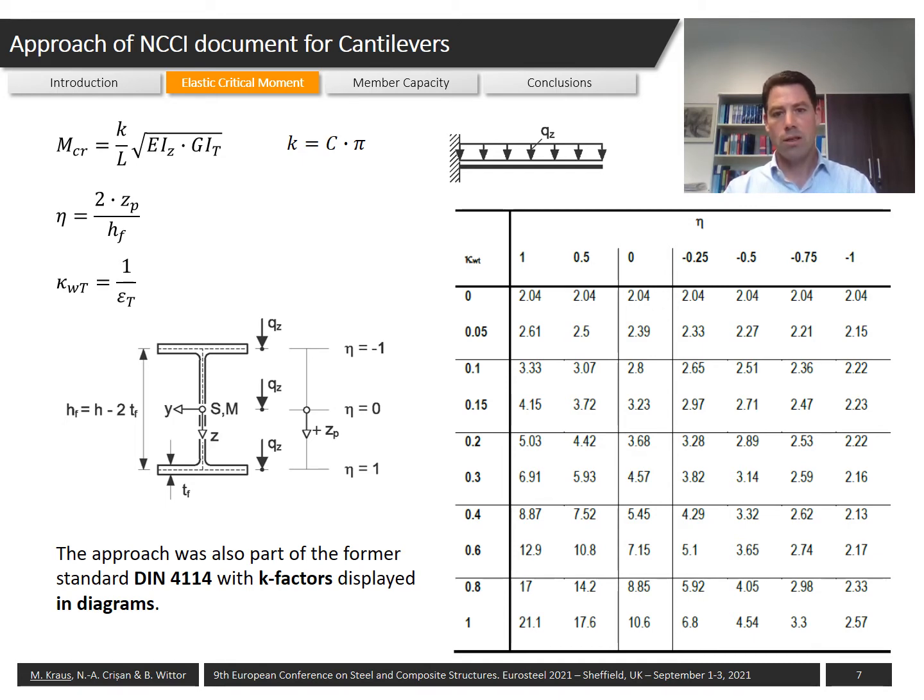You see the table on the right side where with the parameter η you define the point of load application within the cross section, and with the factor κwt you take into account the different member characteristics of structures.